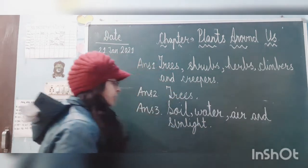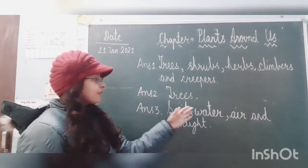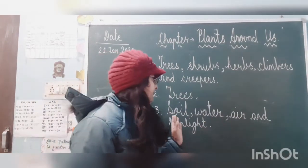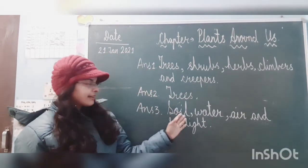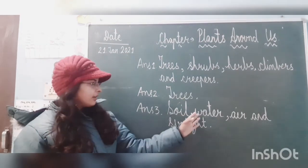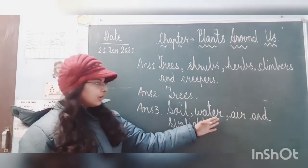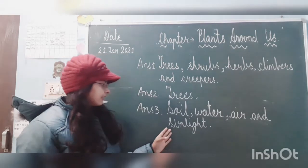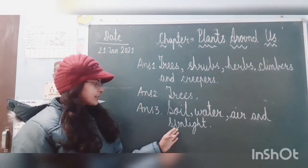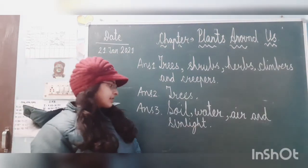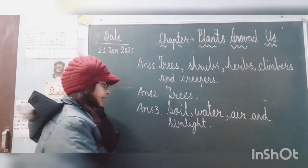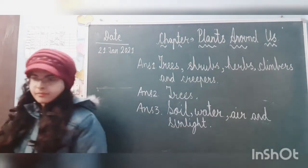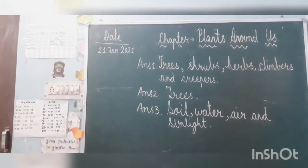So plants need: soil — S-O-I-L; water — W-A-T-E-R; air — A-I-R; and sunlight — S-U-N-L-I-G-H-T. Write it down.